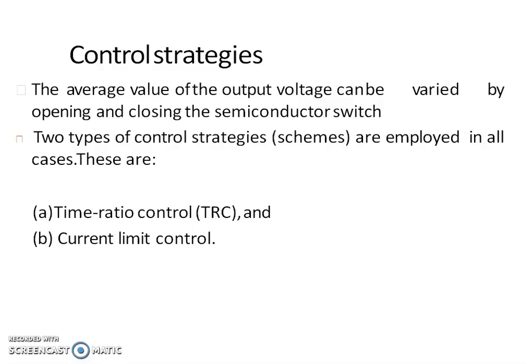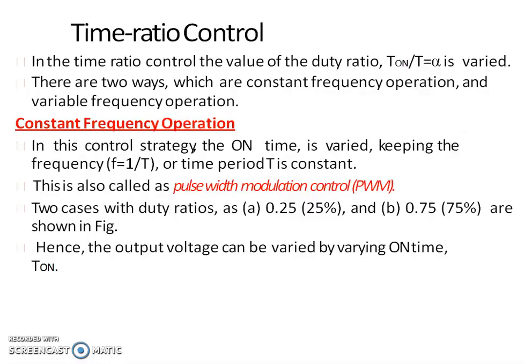There are two types of control strategies employed in a chopper circuit. These are: Time Ratio Control, that is TRC, and Current Limit Control strategy. In Time Ratio Control, the time ratio — that is, the duty ratio T_on divided by capital T — is varied.